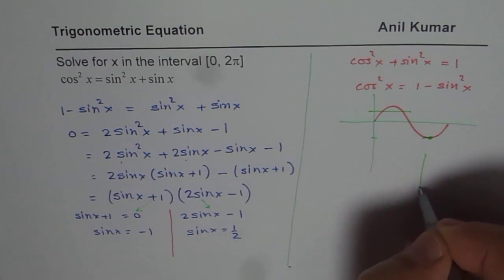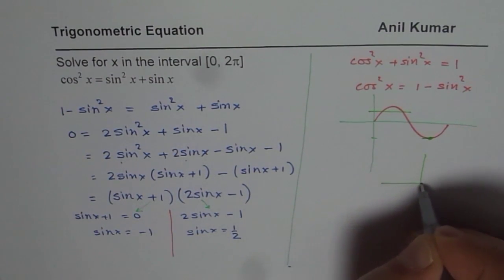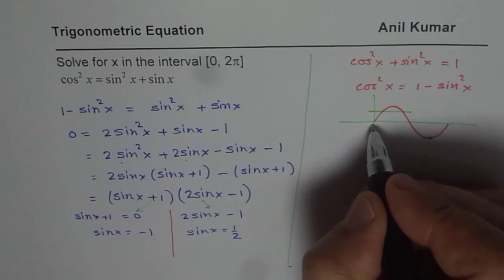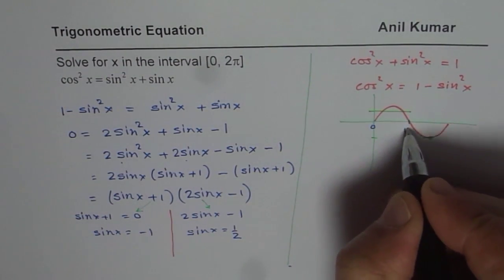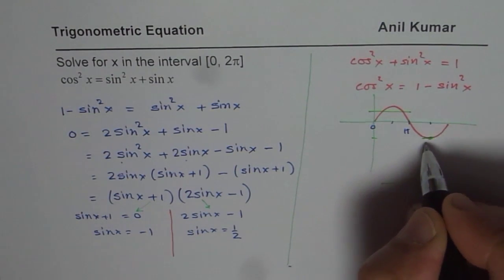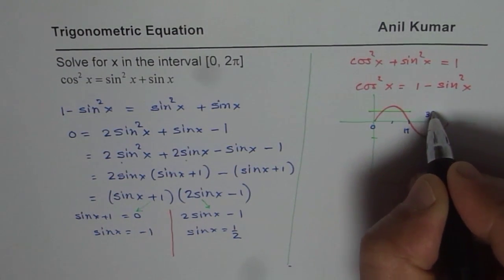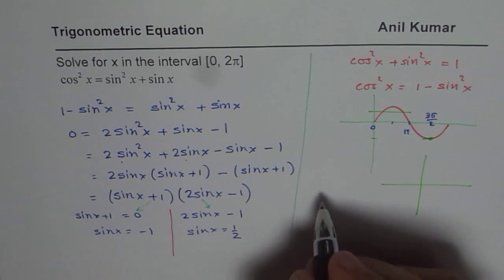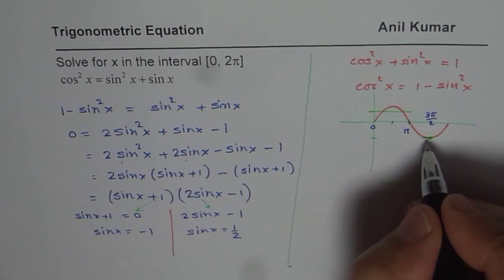So we can use our special triangles or we could use a calculator to find the answer. Now sin x is minus 1 at, so let us see how much is this point. So this is 0. This is π, π/2. And this is 3π/2. So at 3π/2, sin x equals minus 1. So that is one solution. So we know that is one solution.